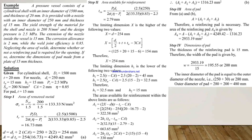First we note down the given data. For the cylindrical shell: inner diameter Di = 1500 mm, thickness T = 20 mm. For the nozzle: inner diameter = 250 mm, thickness TN = 15 mm. H2 = 15 mm, internal pressure Pi = 2.5 MPa, yield strength = 200 N/mm², and corrosion allowance CA = 12 mm, efficiency η = 0.85.